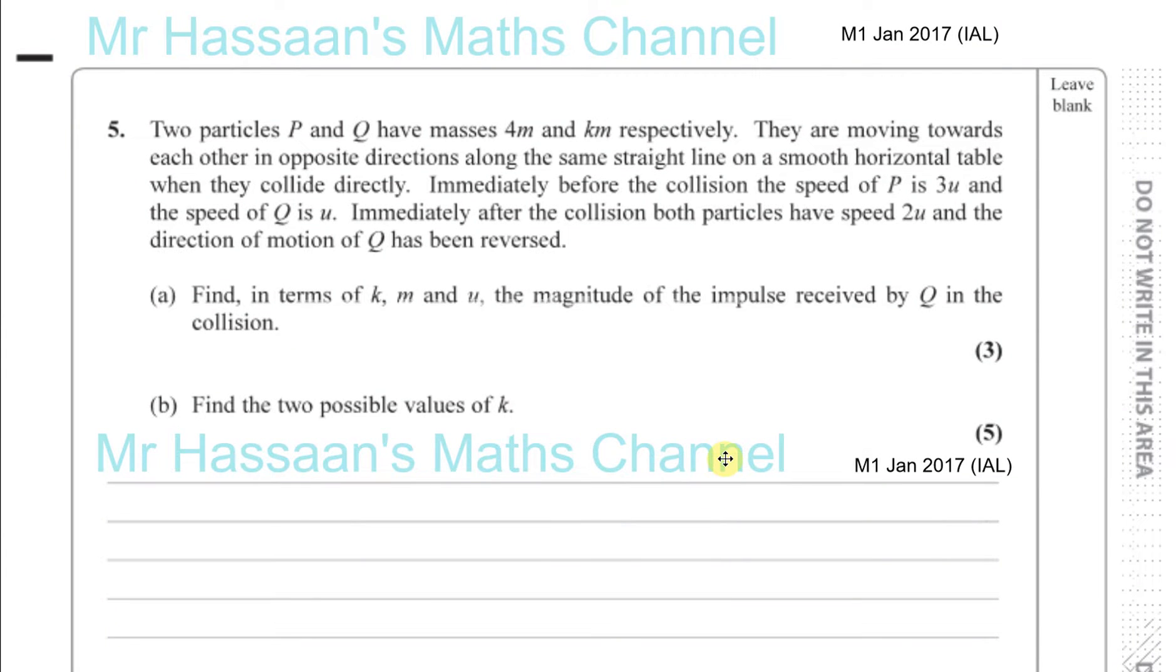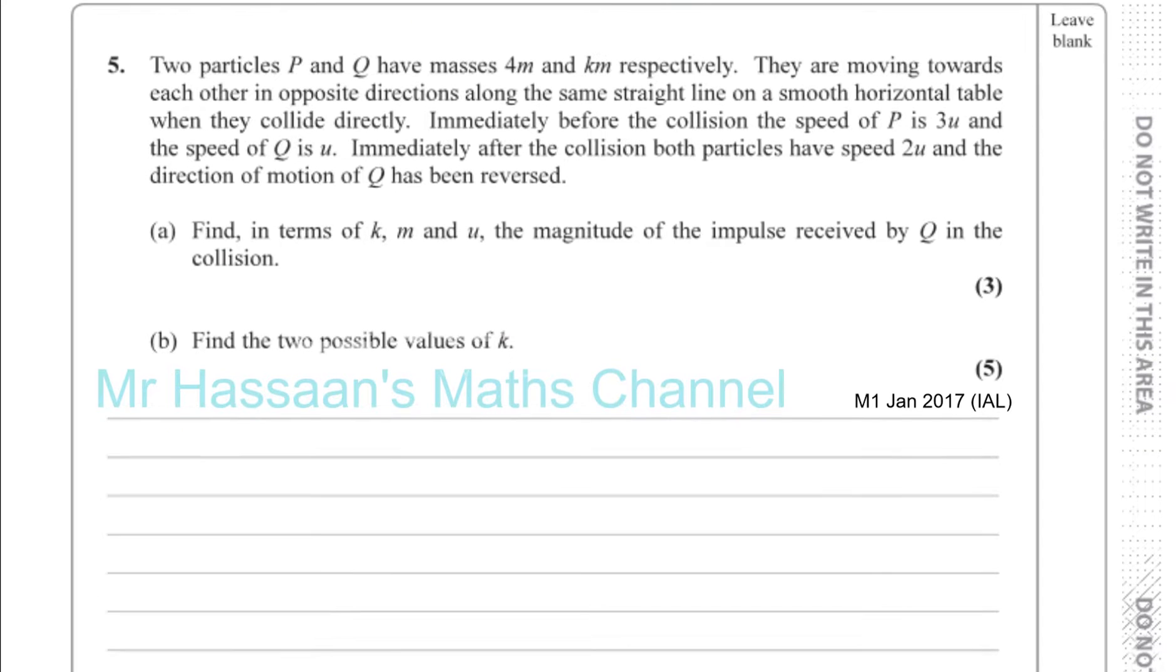January 2017, Mechanics 1, question number 5, International A-Level, a question about two particles, P and Q, with masses 4M and KM respectively.